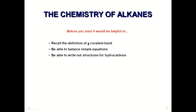Before we move on, it would be a good idea to recall what a covalent bond is. A covalent bond exists because of the sharing of electrons — when atoms come together, they share electrons and form a covalent bond. You should be able to balance simple chemical equations and write the structure of simple hydrocarbons, including methane, ethane, and at least the first six alkanes.